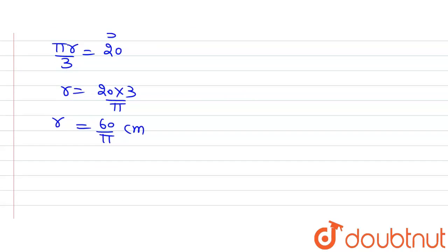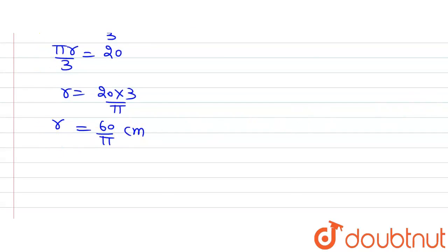Therefore, the radius of the circle will be 60 divided by π cm. That's all. Thank you.